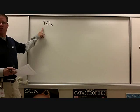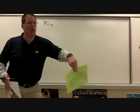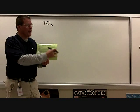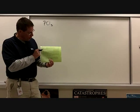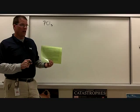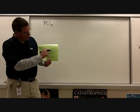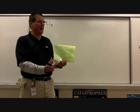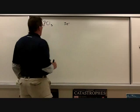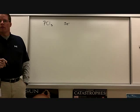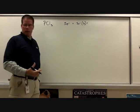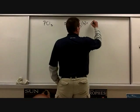Phosphorus is element 15 and has five valence electrons — two in the s orbital and three in the p. Each chlorine brings seven valence electrons, and we have three chlorines: 3 × 7 = 21. Total: 21 + 5 = 26 electrons. Step two: which is the central atom? Phosphorus — any time you have a singleton, put it in the middle. Carbon always goes in the middle when present; hydrogen never goes in the middle because it can only have two electrons.